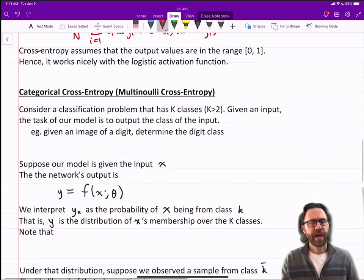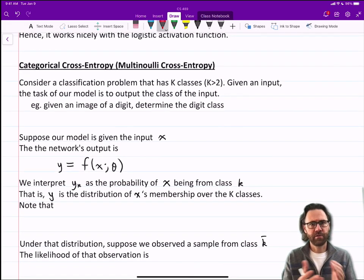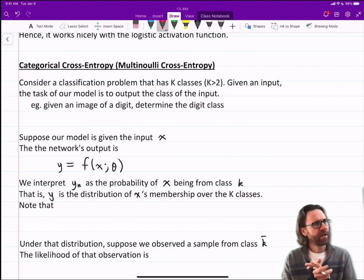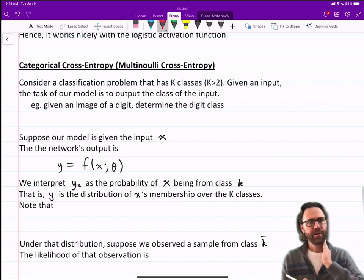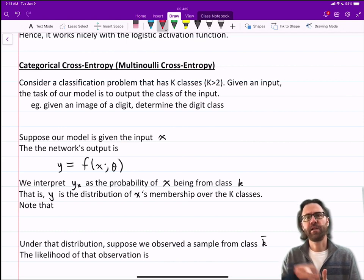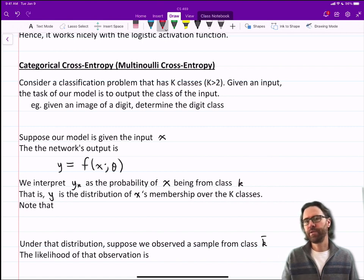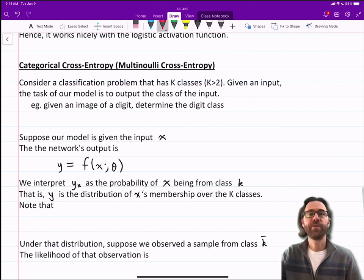The last one I want to talk about is categorical cross-entropy, sometimes called multinoulli cross-entropy or multinomial cross-entropy. Now it's not just two classes, we have K classes where K is bigger than 2. Consider a classification problem that has K classes. Given an input, the task of our model is to output the class of the input. For example, given an image of a digit, we want to determine the digit class. There are 10 different digit classes.